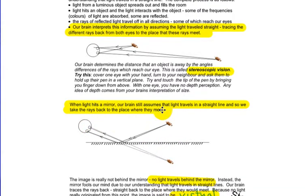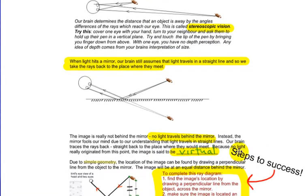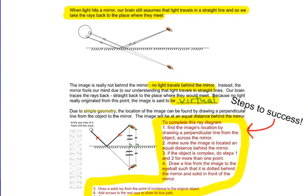When light hits a mirror, our brain still assumes that light travels in straight lines. And so we kind of think of the object as being over here, when in reality, it's the image of the object. The image is really not behind the mirror. No light travels behind the mirror. Instead, the mirror fools our mind due to our understanding that light travels in straight lines. Our brain traces the rays back, straight back to the place where they would meet. Because no light really originated from that point, it's said to be a virtual image, as we talked about.